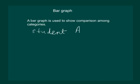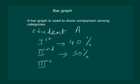The student A scored in first term exams 40 percent marks, in the second term he scored 50 percent marks, and in the third term he scored 60 percent marks.